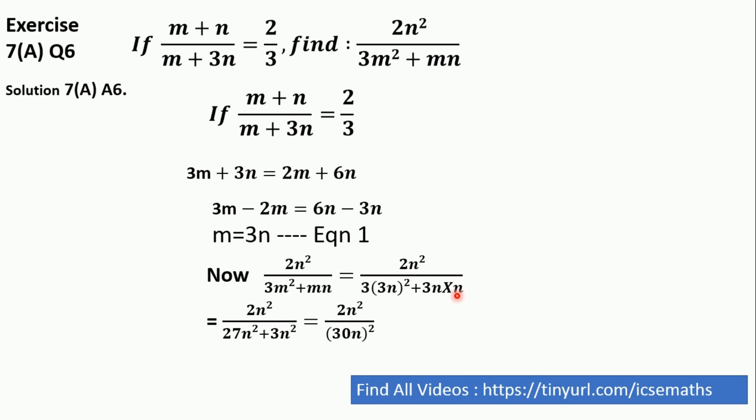Now if we solve this, this will become 2n square oblique 27n square plus 3n, and that will become 2n square oblique 30n whole square. And that's how we will be getting 1 by 15. This n and this n cancelled, and 2 by 30 is equal to 1 by 15. And that is your answer.